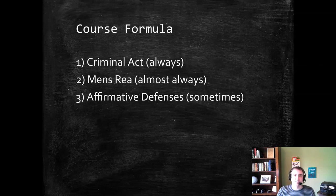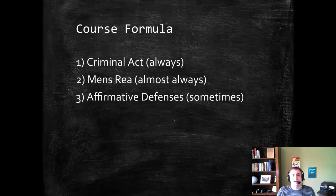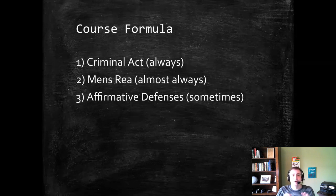The second area we'll get to in the next chapter is called mens rea, dealing with the mental states of a defendant and the guilty mind they might have. It's not always required — there are some crimes that do not have mens rea — but it is, as we'll see, the overwhelming norm for criminal law.